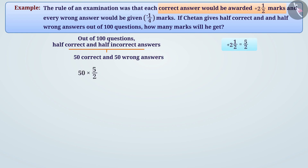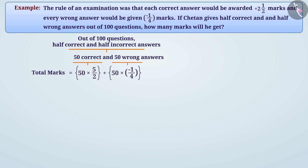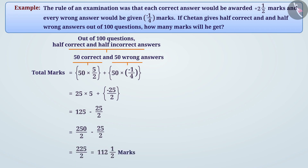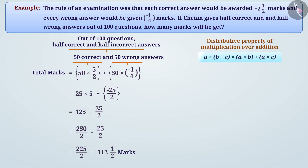He will get 50 × 5/2 marks for 50 correct answers. Similarly, minus 1/4 marks for one wrong answer means he will get 50 × (−1/4) marks for 50 incorrect answers. Total marks = 50 × 5/2 + 50 × (−1/4). Simplifying: 25 × 5 + (−25/2) = 125 − 25/2 = 250/2 − 25/2 = 125/2 = 112 and a half marks.